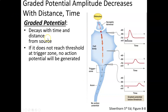Graded potentials decay with time and distance. Here's an example of a stimulus causing a graded potential on the cell body of a neuron, at the far end away from the axon. The potential deflects to about minus 40 millivolts, exceeding threshold, so theoretically it should trigger an action potential. However, the action potential doesn't get triggered until it reaches the axon hillock — functionally called the trigger zone — where the axon attaches to the cell body and where the first double-gated sodium channel is located.